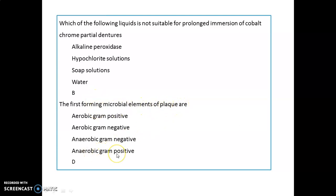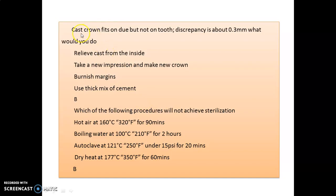This is a very good question — a cast crown fits on the die but not on the tooth, and the discrepancy is about 0.3 mm. What are you going to do? You take a new impression and make a new crown.